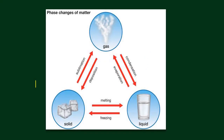Matter can change its phase from one phase to another — from solid to gas, gas to liquid, and so on. For example, solid to gas is called sublimation. An example would be moth balls, or naphthalene balls. When you leave them in your drawer or cabinet, after a few days the balls get smaller because of sublimation. Another example is dry ice — it doesn't melt or turn into liquid, but changes directly from solid to gas.